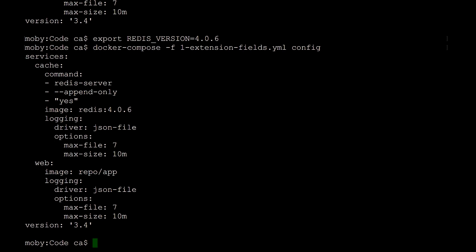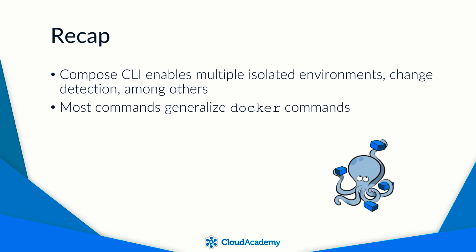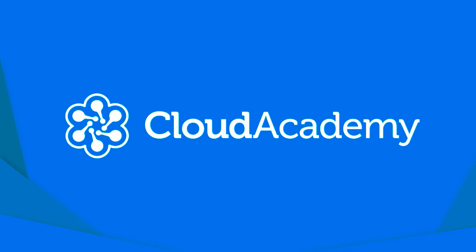This lesson started by outlining features of the Compose CLI, including how it can create multiple isolated environments on the same host, making it appealing for continuous integration, testing, and development. It also has built-in change detection to only do what is required to bring the application to the desired state. The Compose CLI follows the same pattern as the Docker CLI, with two important unique commands: UP, which brings an application up, and DOWN, which brings it down removing containers and networks but leaving images and volumes untouched by default. In the next lesson, we'll bring up a web application with Compose using pre-built images from Docker Hub.